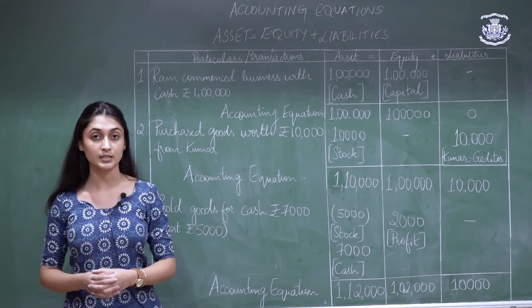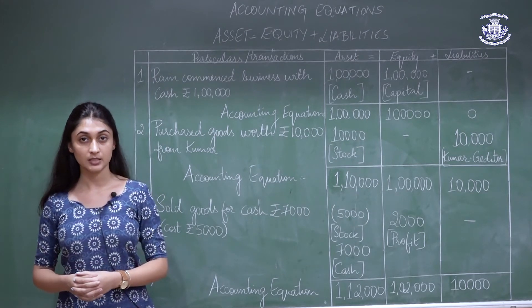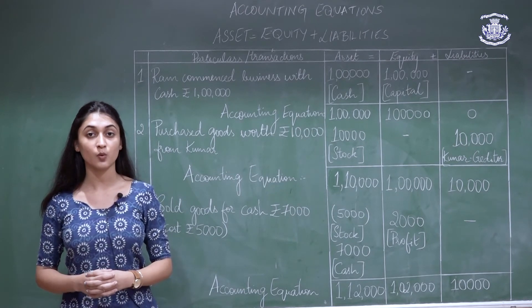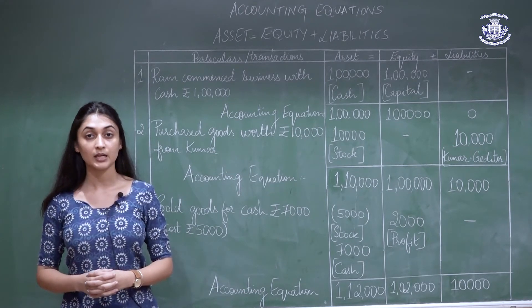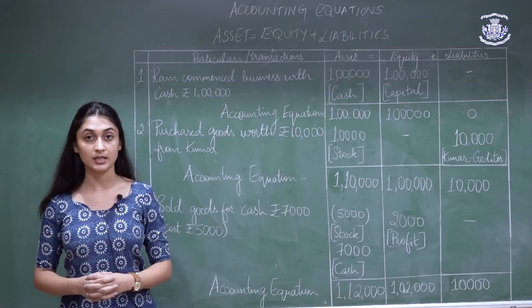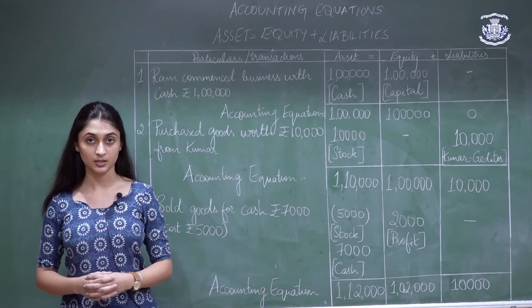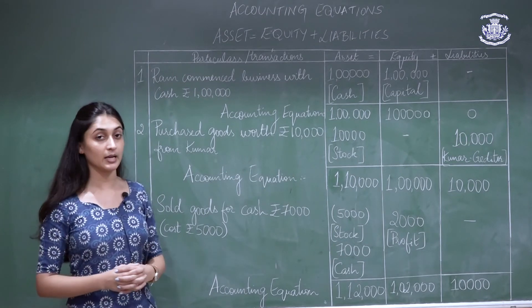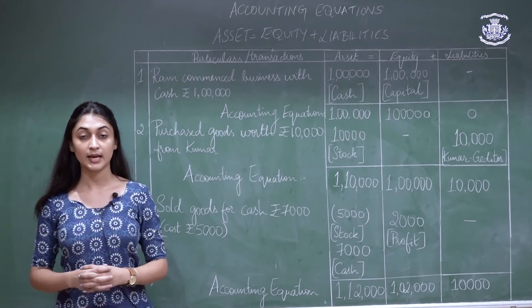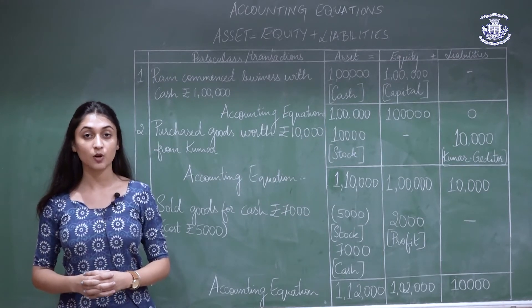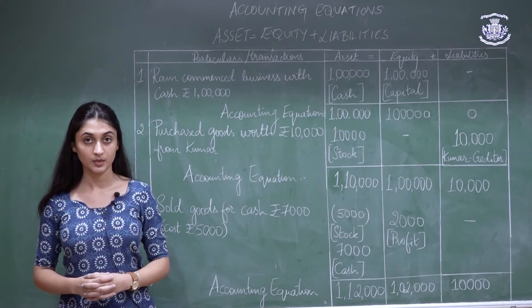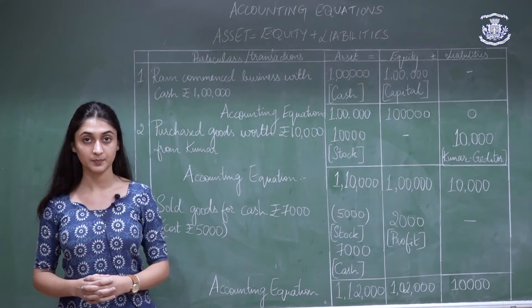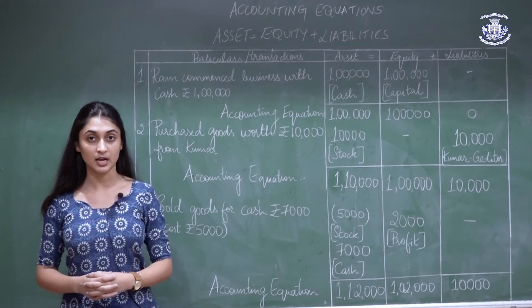When there is an increase in assets, the asset column will be added, and when there is a decrease in assets, the asset column will be deducted. The same applies to the equity and liabilities columns. However, when expenses arise, the equity column will be deducted, and when incomes are earned, the equity column will be added.